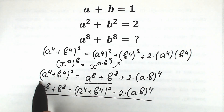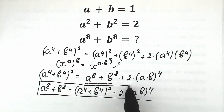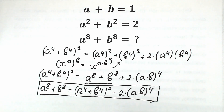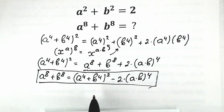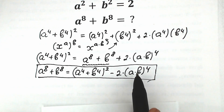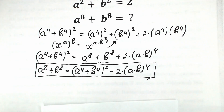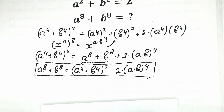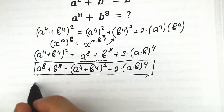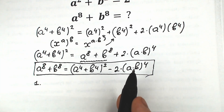So to find the sum of 8th powers, we need two things: first, find a to the 4th plus b to the 4th, and second, find a times b. If we find both of these, we can easily get our answer. Let's start with finding a times b first.